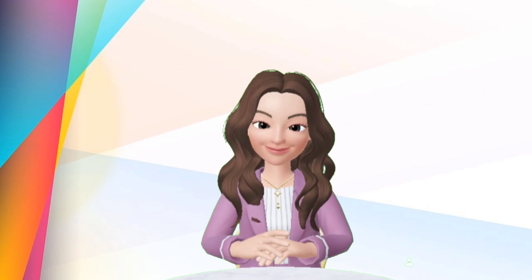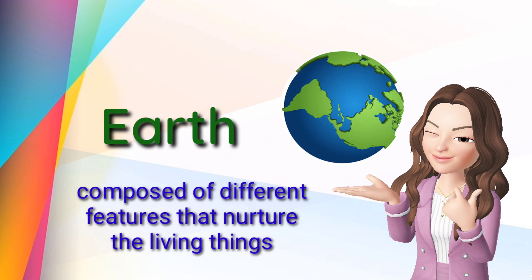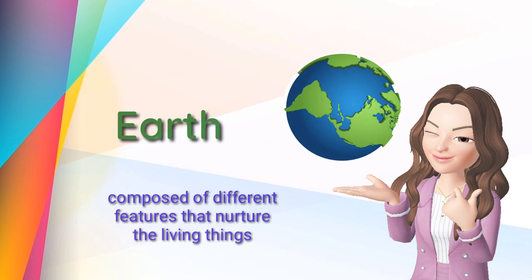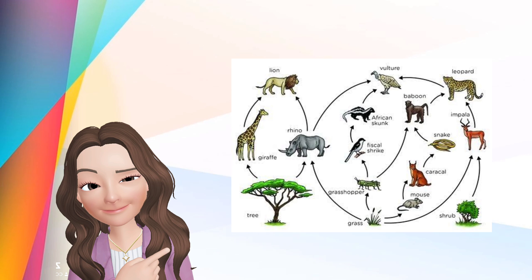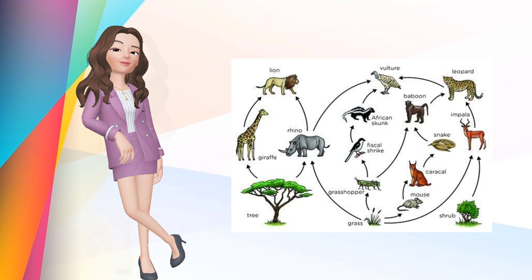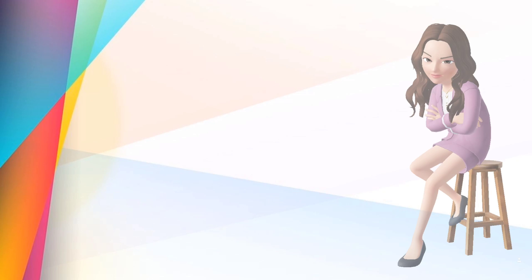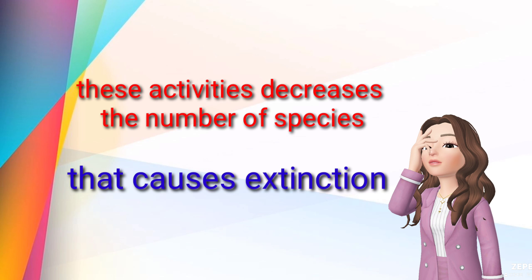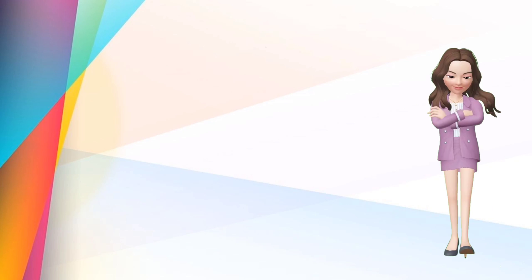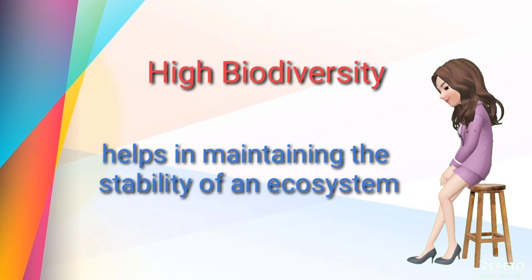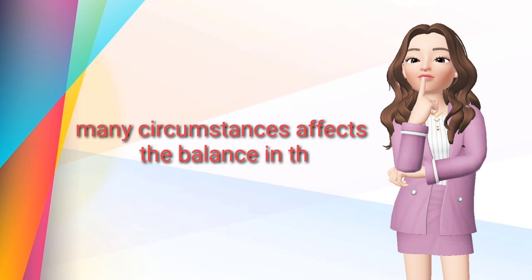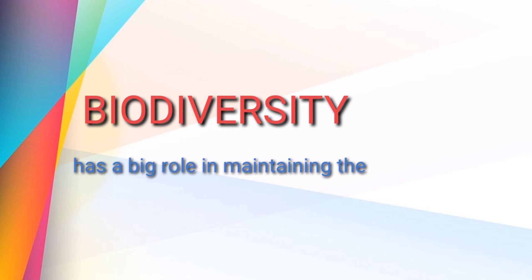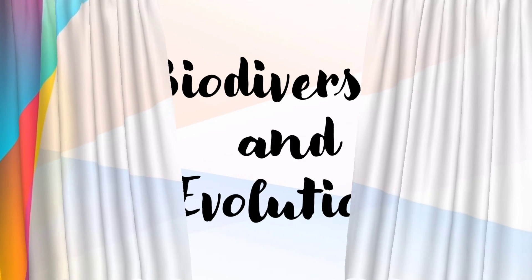Hello everyone! For today's lesson, we're going to discuss another interesting topic. The Earth is composed of different features that nurture living things that have a big role in balancing ecological conditions. The interaction between organisms makes the relationship and connection of one another intact to maintain the balance in the ecosystem. However, the reality that takes place nowadays causes the decreasing number of different species, sometimes causing their extinction, which affects the balance in the ecosystem. Biodiversity has a big role in maintaining its balance. For today's lesson, we're going to talk about biodiversity and evolution.